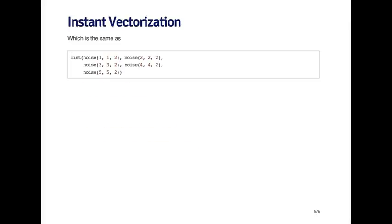This is the same as manually typing out a list with five different function calls. This way it's nice to instantly vectorize a function that doesn't allow for vector inputs.